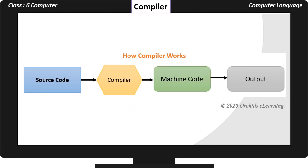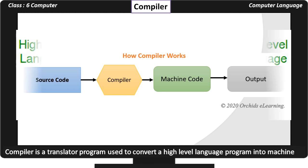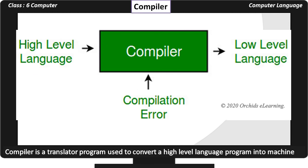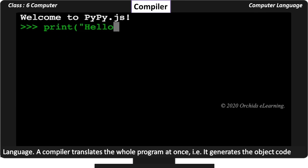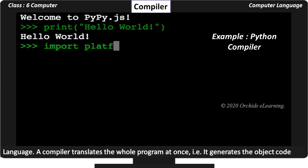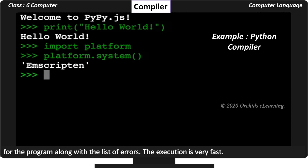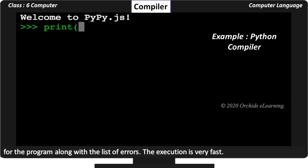Compiler. The compiler is a translator program used to convert a high level language program into machine language. A compiler translates the whole program at once; that is, it generates the object code for the program along with a list of errors. The execution is very fast.